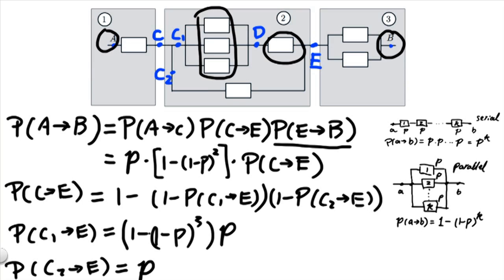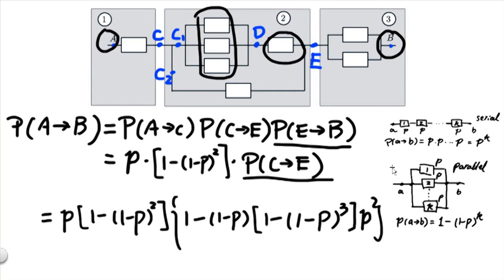At this point, there is no longer any unknown variables. And we have indeed obtained exact values for all the quantities that we're interested in. So starting from this equation, we can plug in the values for P(C2→E), P(C1→E) back here, and then further plug in P(C→E) back here. That will give us the final solution, which is given by the following somewhat complicated formula.